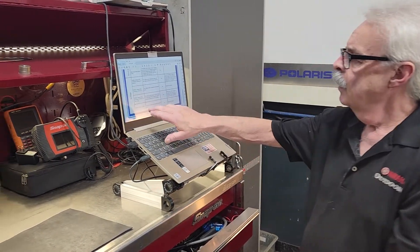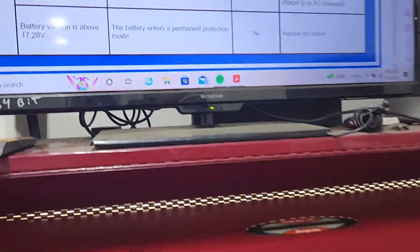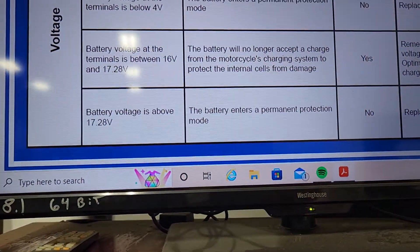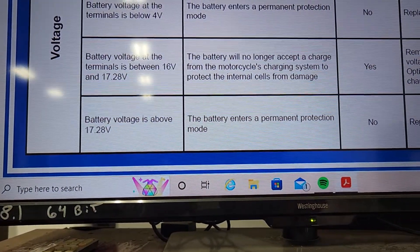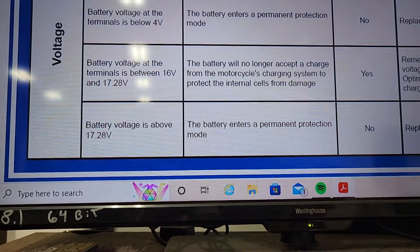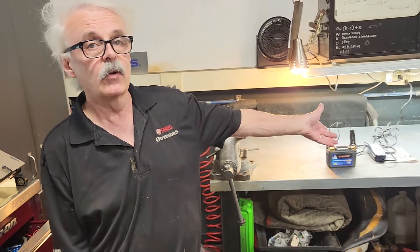Another one: if the battery voltage is above 17.28 volts, the battery enters a permanent protection mode, cannot recover, replace battery. But what's interesting is this battery charger will tell you all that stuff, if it's good or bad.